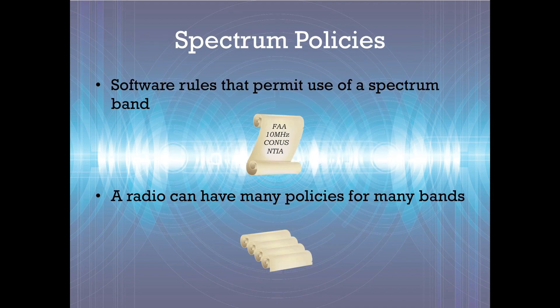Cognitive radios can discover whitespace opportunities through spectrum policies. Spectrum policies are software rules that describe when, where, how, and by whom a spectrum band can be used. A cognitive radio can have many policies from which to choose, based on the current situation.